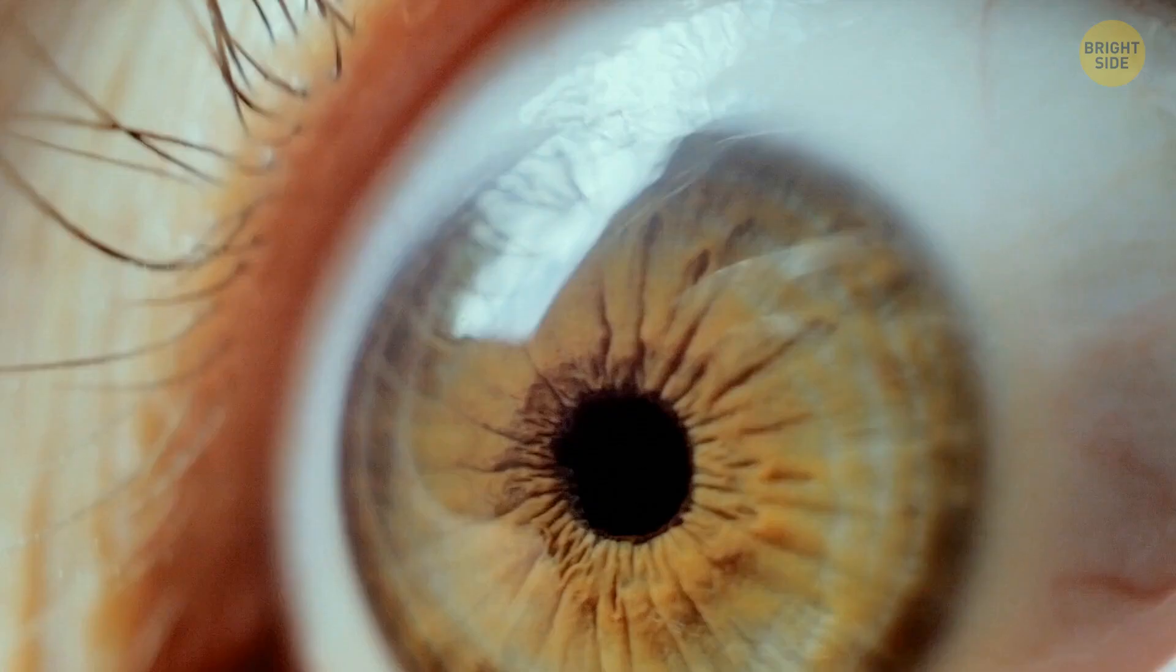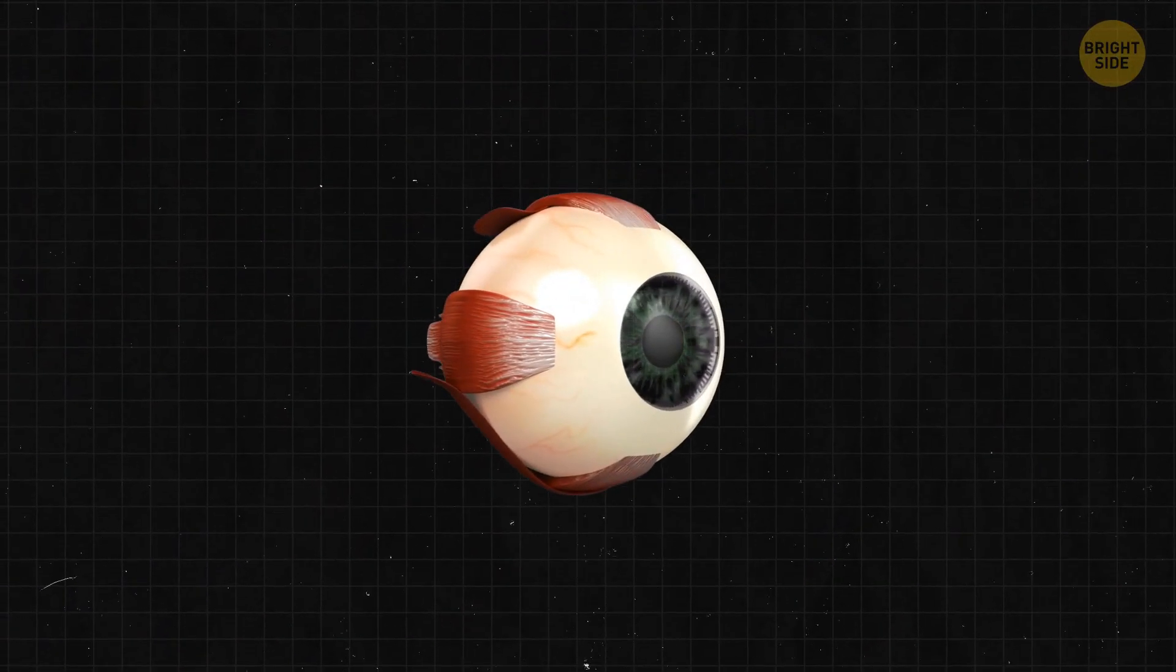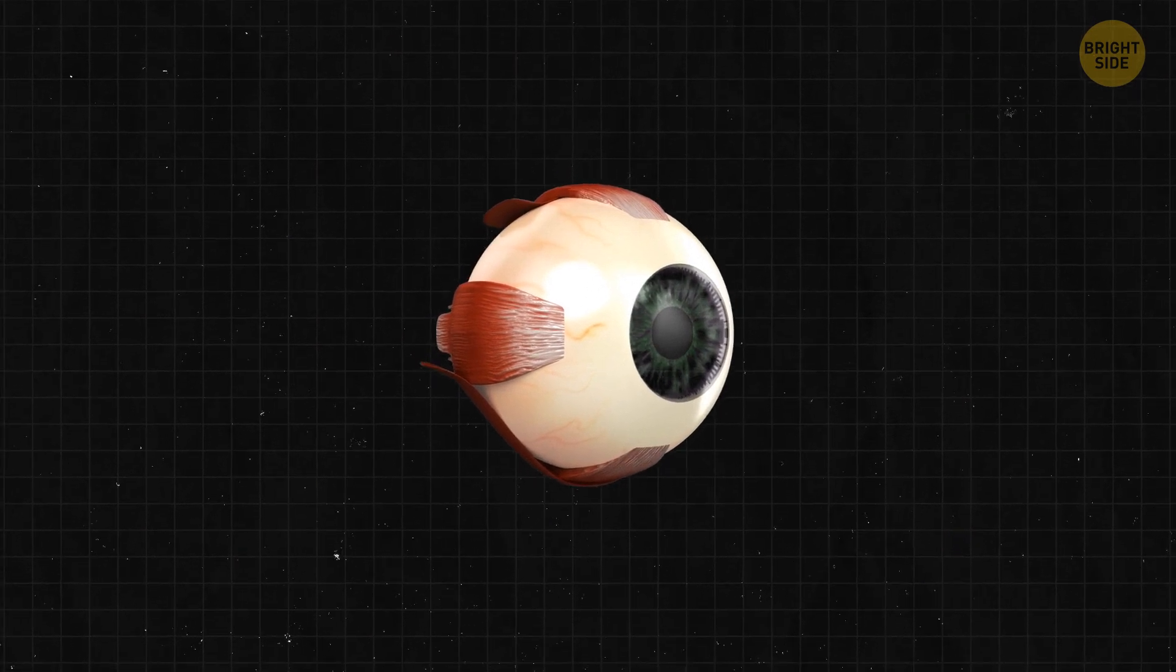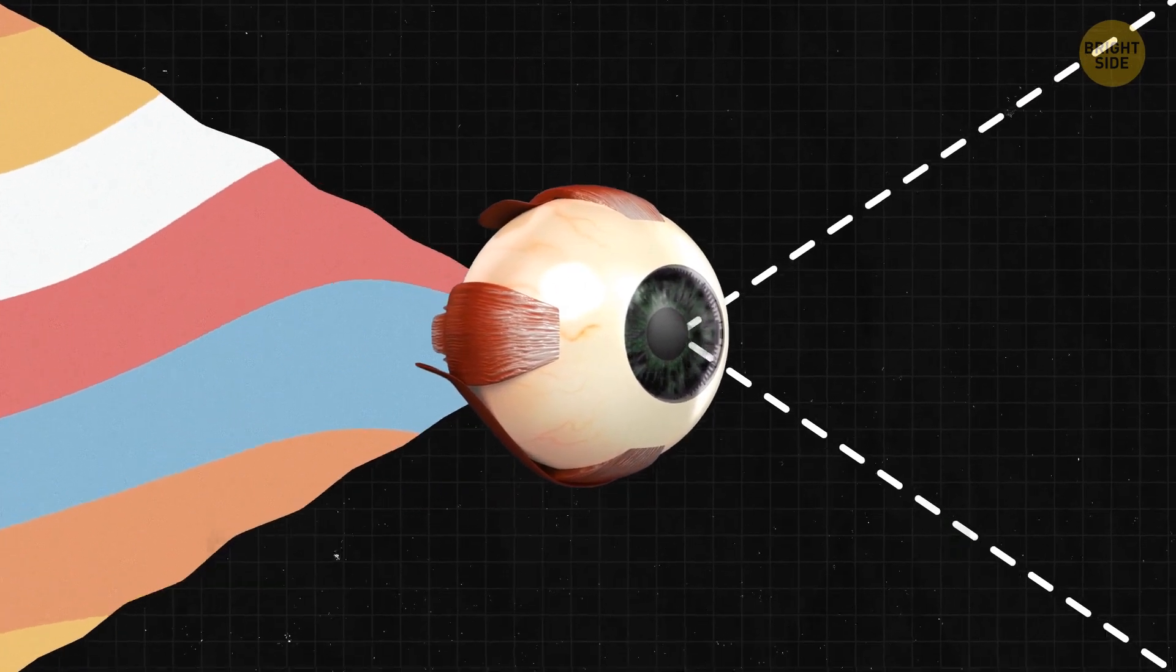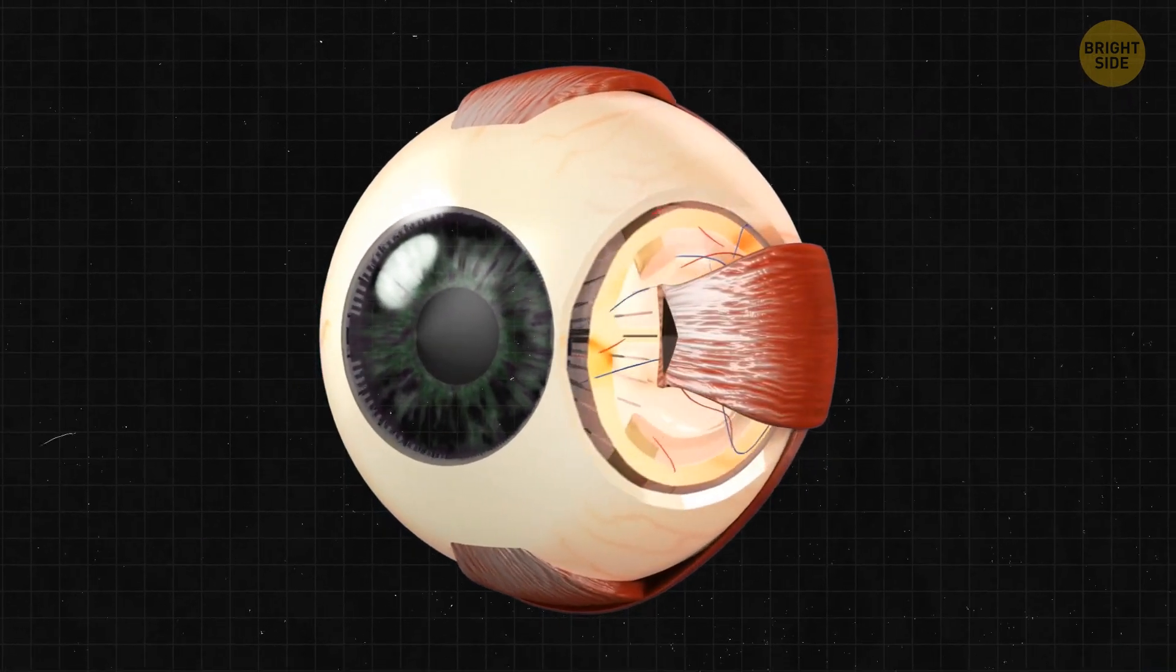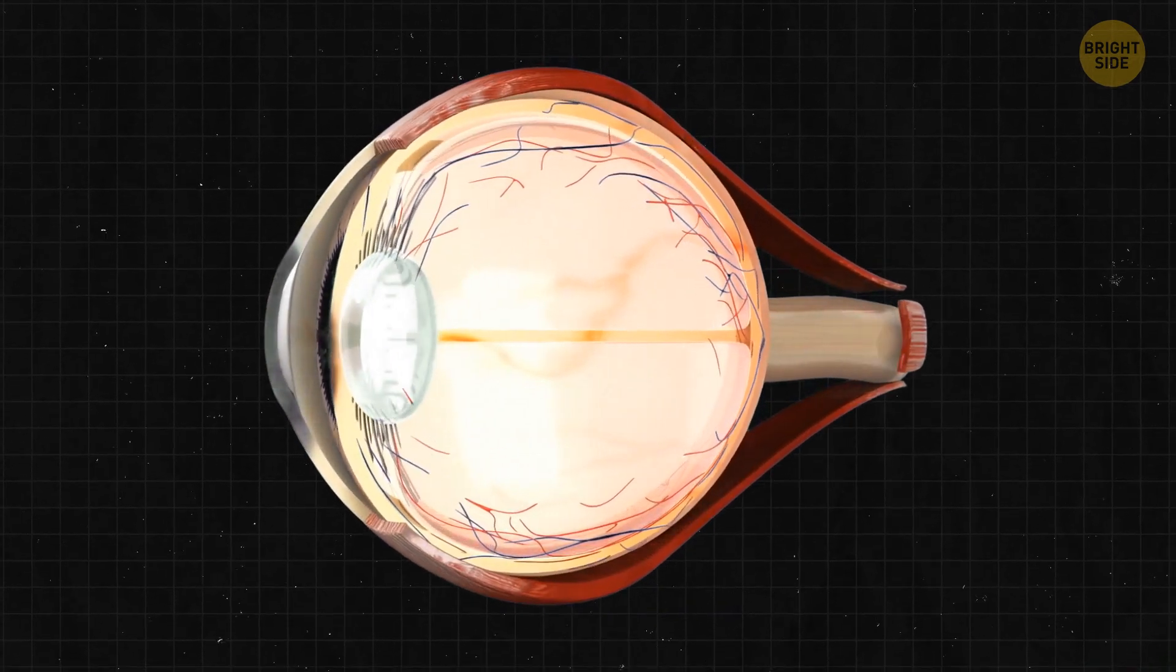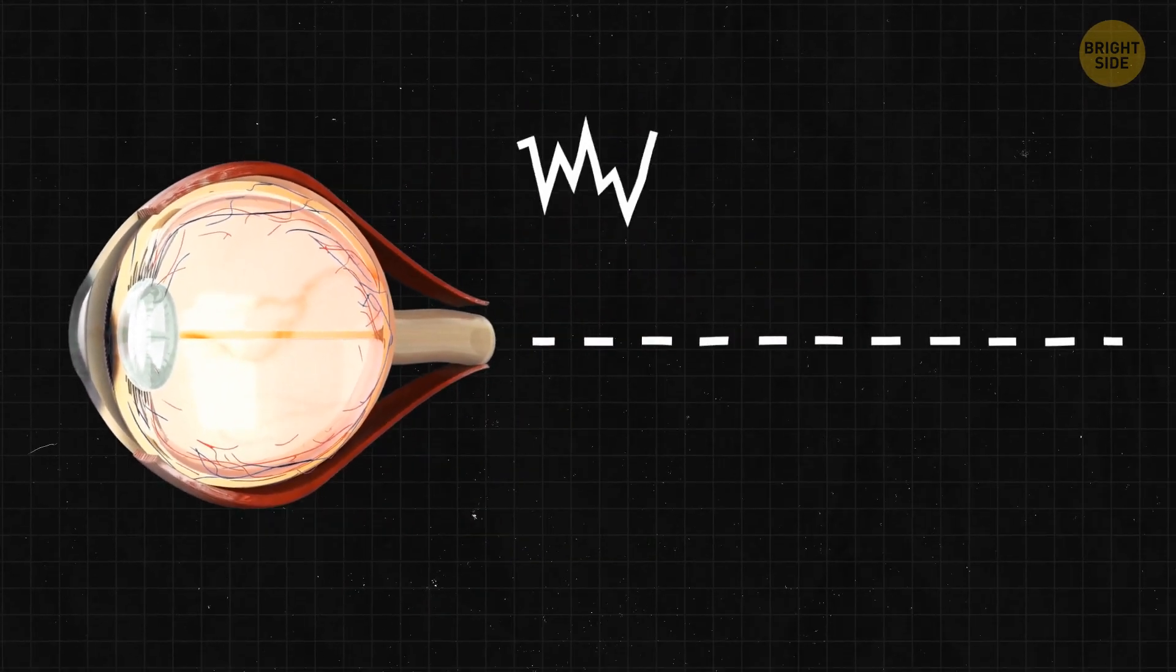Starting with our eyes, which are constantly relaying loads of visual info to the brain. The cornea acts like an entrance gate, skillfully bending light. The iris, or the colorful part, adjusts the light dose, and the lens focuses the rest onto the retina.